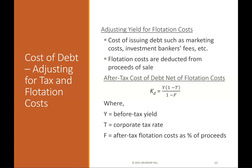Cost of debt — adjusting for flotation costs: Flotation costs include marketing costs, investment banker's fees, etc., and are deducted from the proceeds of the sale. The after-tax cost of debt net of flotation costs is: KD = Y × (1 − T) / (1 − F), where Y is the before-tax yield, T is the corporate tax rate, and F is the after-tax flotation costs as a percentage of proceeds.